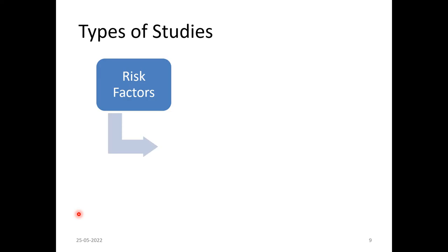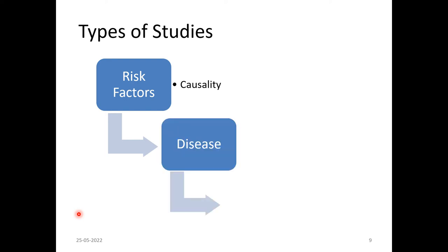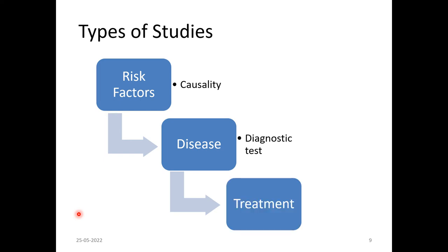We need to understand the types of studies in health research. Studies are divided into three components: those looking at risk factors, causality, or prevalence of disease; diagnostic test models looking at how to diagnose the disease; and intervention studies looking at the treatment aspect. So the three basic aspects of health research are studying risk factors, diagnosis, and treatment.